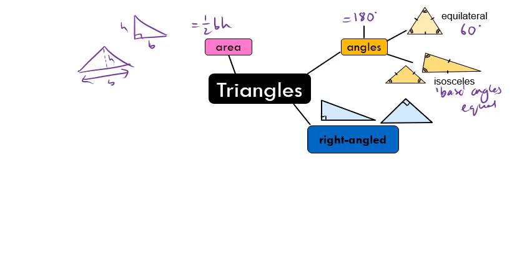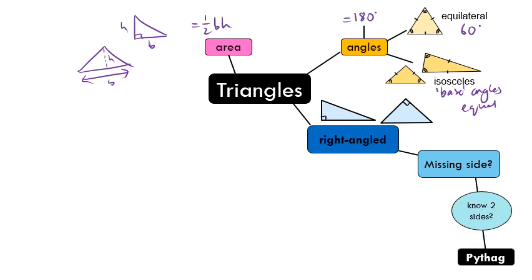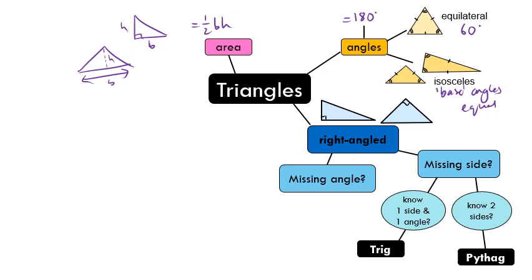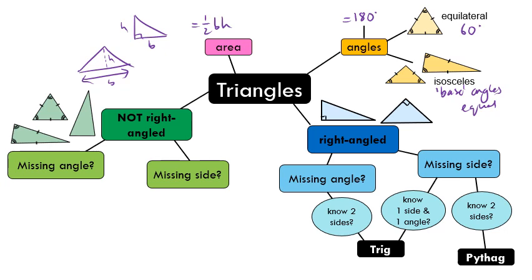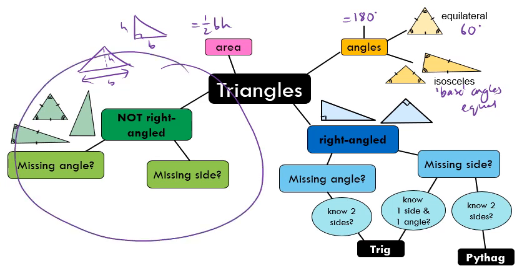We've done a lot with right-angle triangles. If we're trying to find a missing side and we know two other sides, we can use Pythagoras. If we're trying to find a missing side and we know one side and one angle, we can use trigonometry. We can also find a missing angle if we know two sides using trigonometry. One area we haven't looked at is triangles that are not right-angled — that's where the sine rule fits in, though it also works for right-angle triangles.